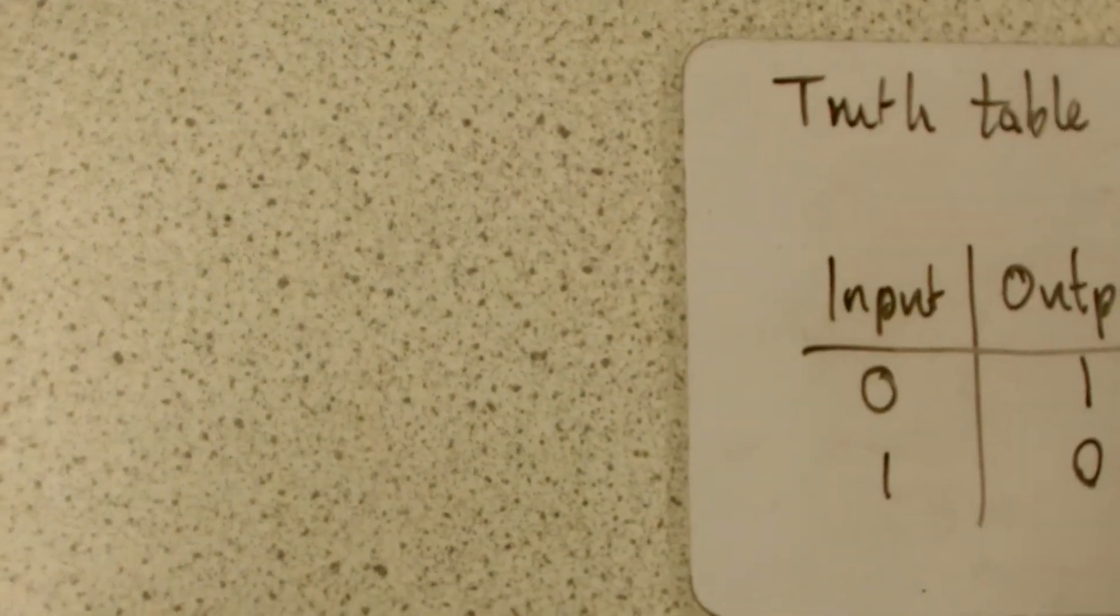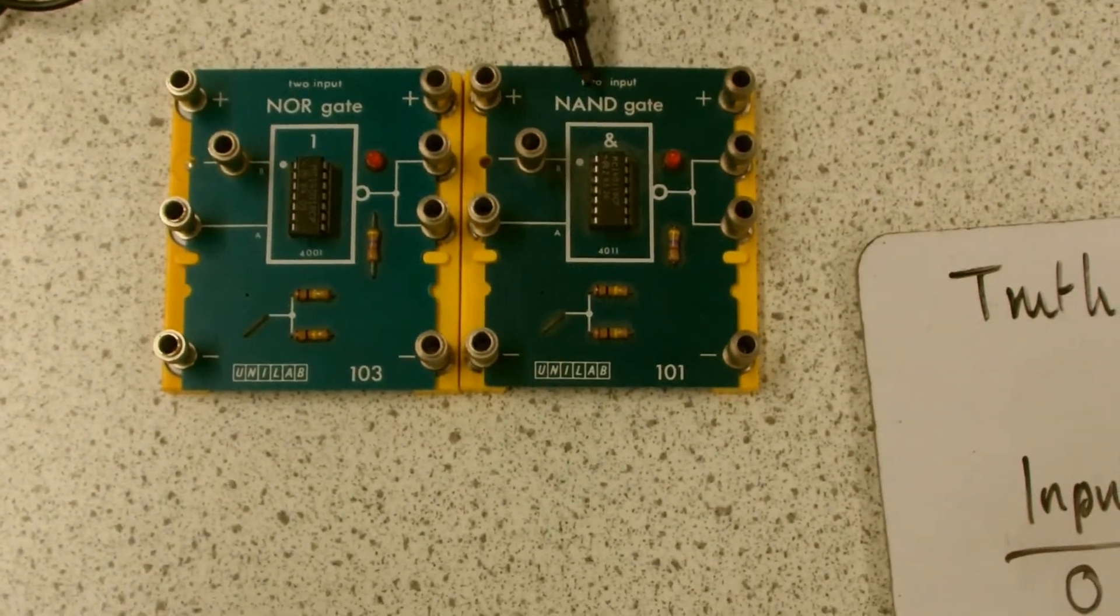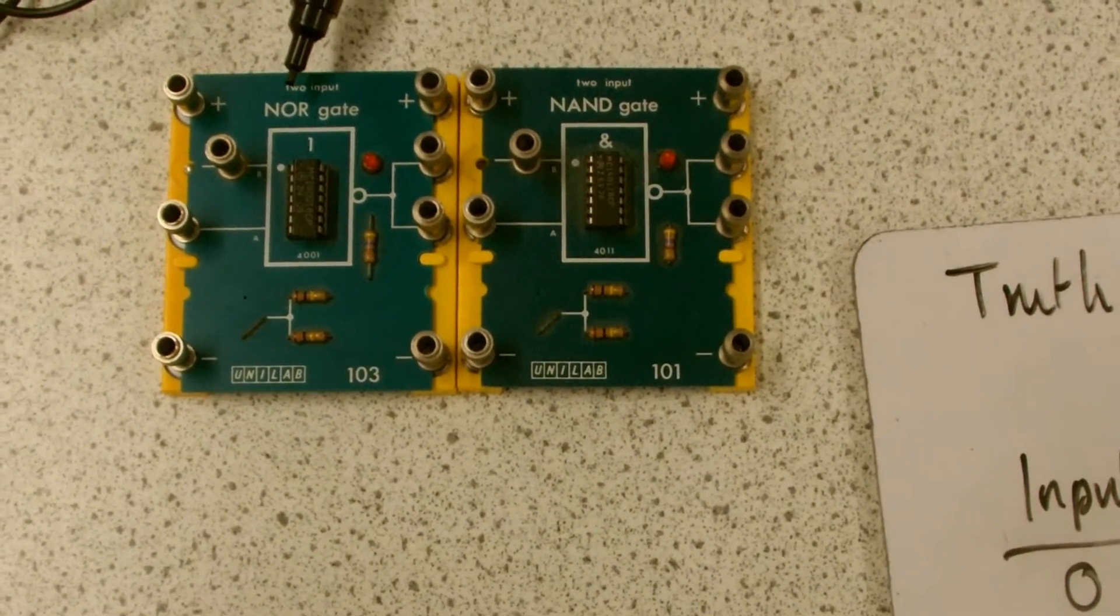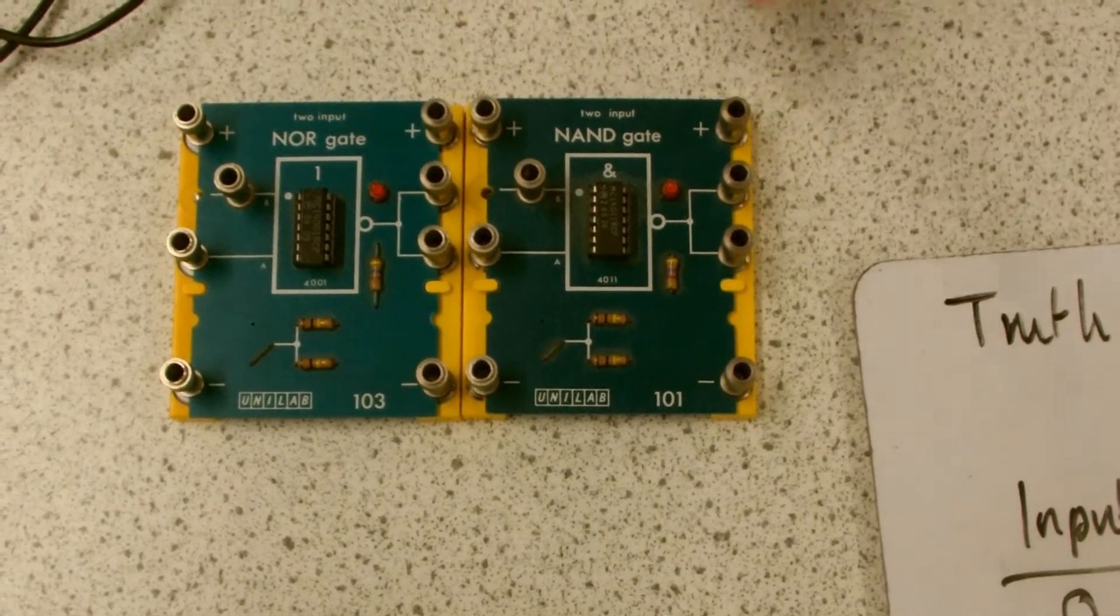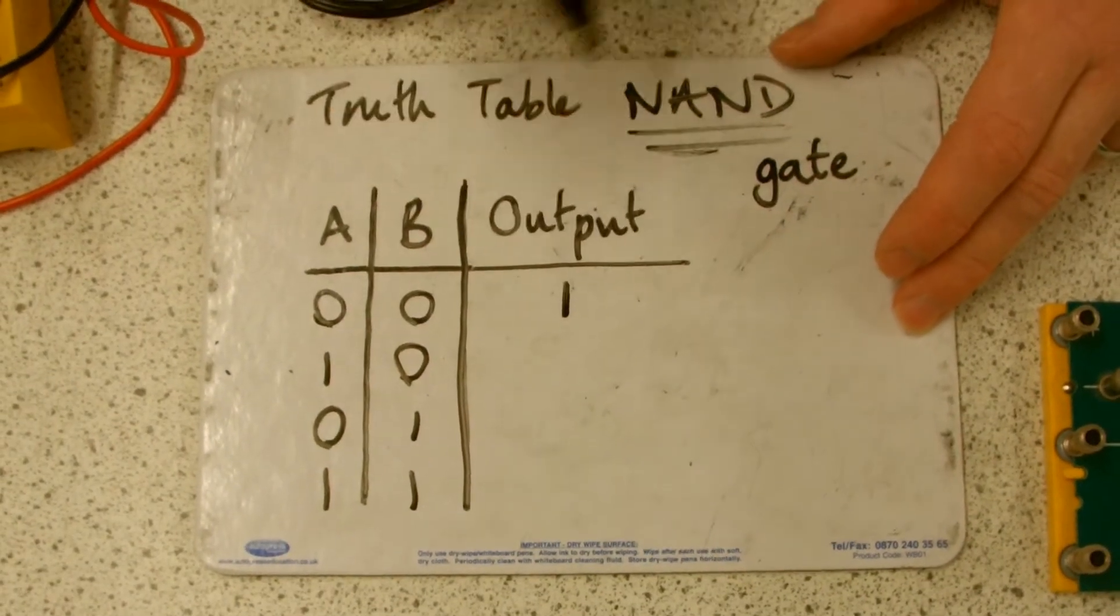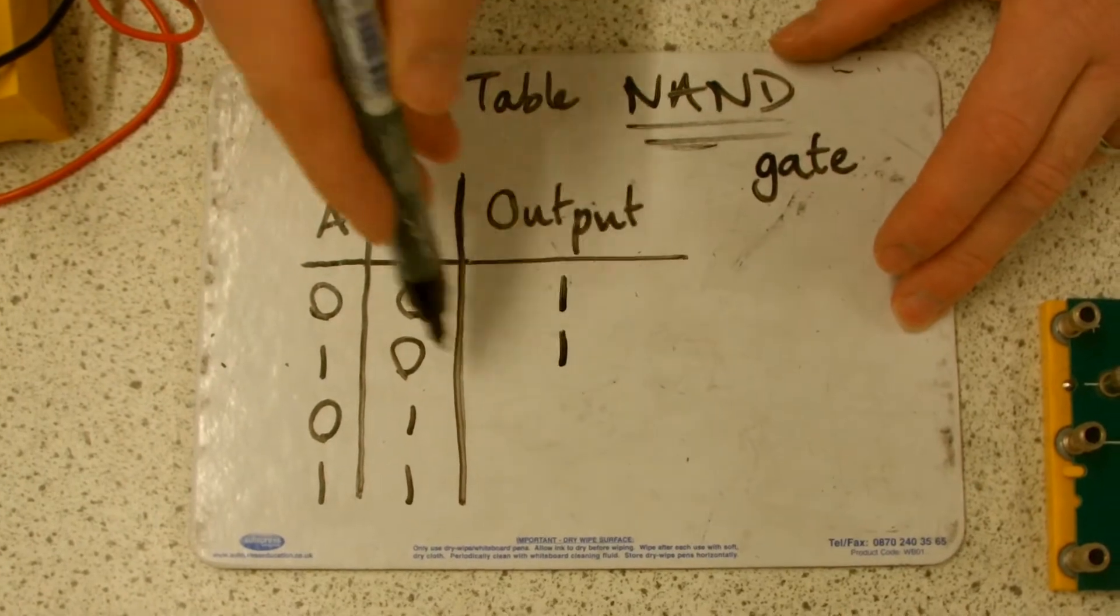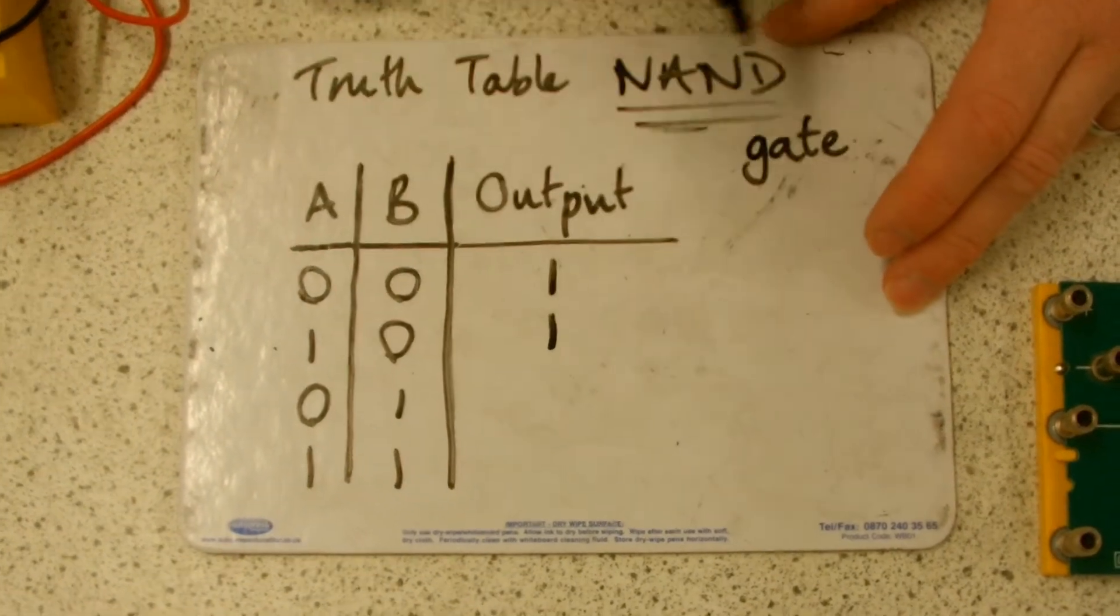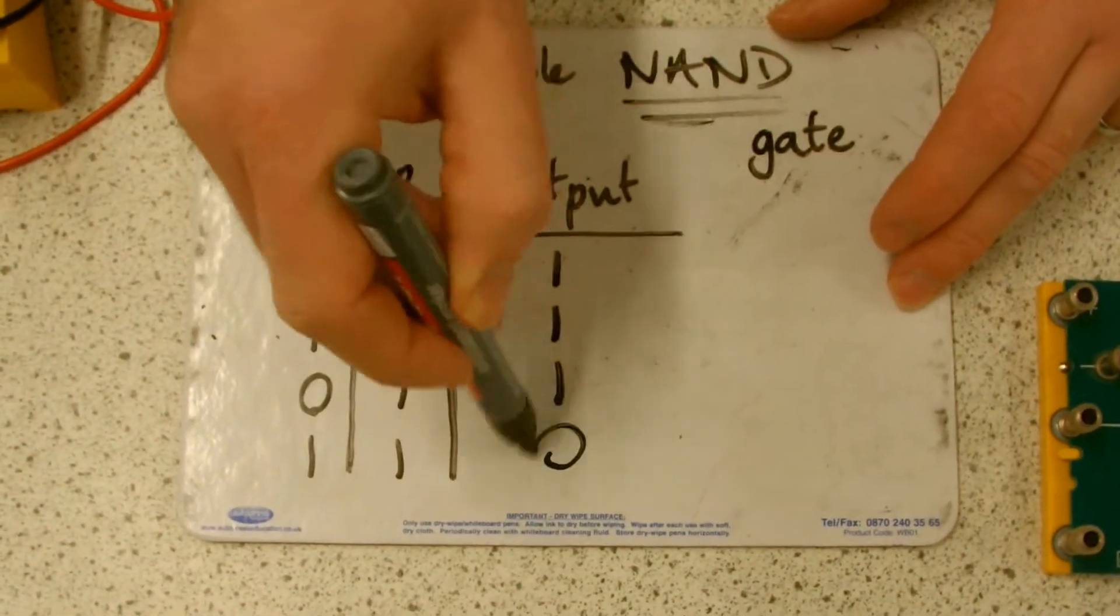And we combine those with AND gates and OR gates to make a NAND gate and a NOR gate. And you just have to remember these are the inverse of an AND and an OR. So this time, they're both off the two inputs, so the output is on. One of them's on, one of them's off. Well, that's the opposite of an AND, isn't it? So the output is on. One of them's on, the output's on. Both of them are on, it's off.